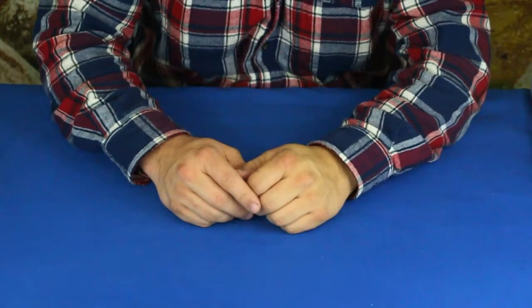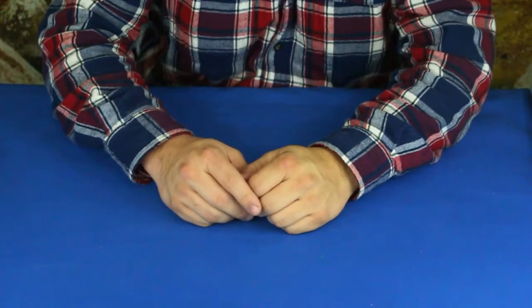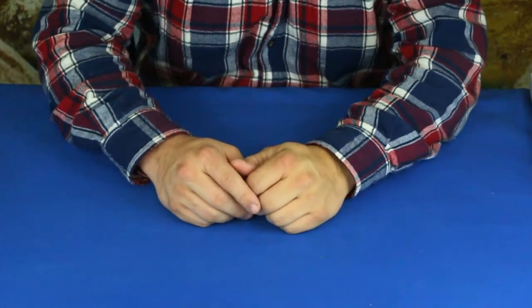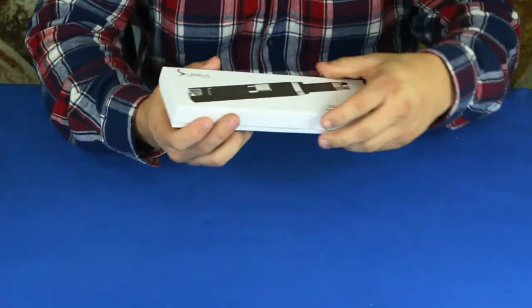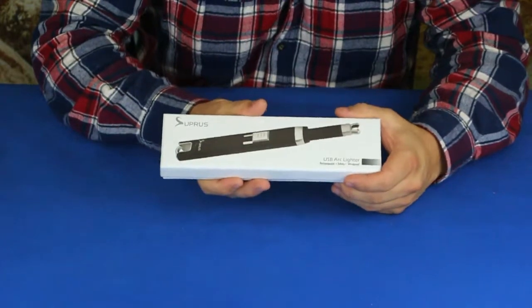Hello everybody, welcome back to the World of Me. My name's Cougar and this is another episode from our Amazon review series. I've got another package in here. It is a USB arc lighter.